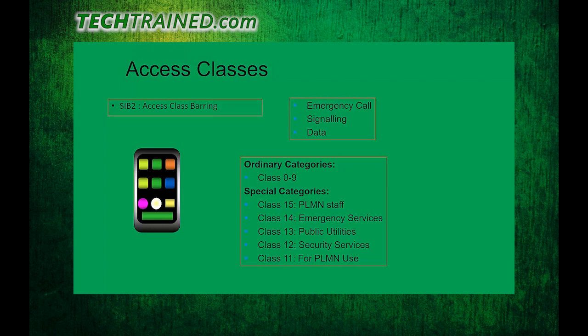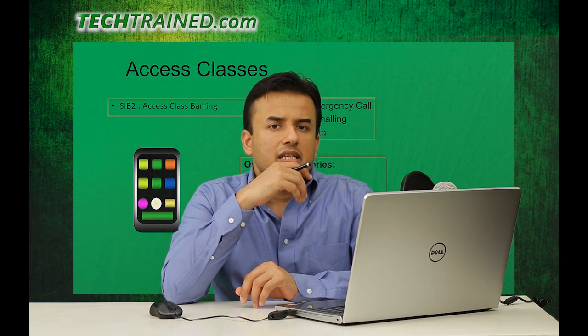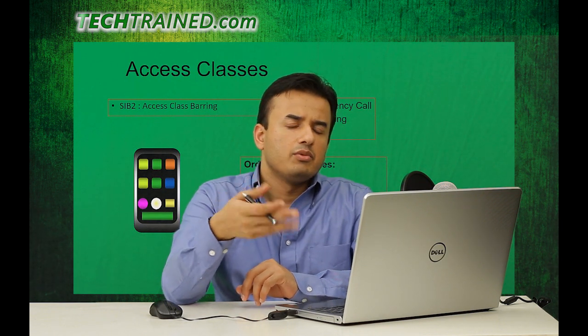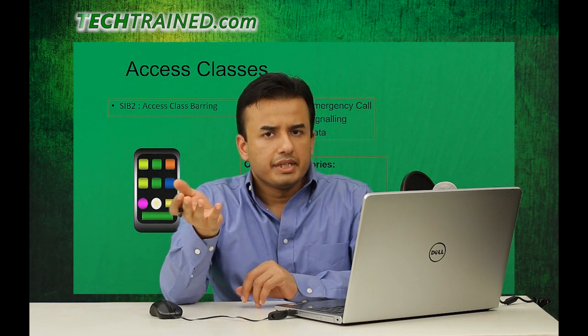As you can see on the screen, there are ordinary classes ranging from 0 to 9, while special categories range from 11 to 15. Class 11 represents PLMN staff, class 12 represents security services — FBI agents, CIA agents, or other specific personnel. Class 13 covers public utilities such as medical staff and city services, and class 14 is for emergency services.